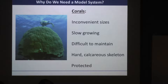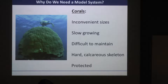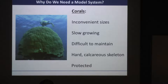Corals are incredibly slow growing — some species grow slower than a centimeter a year. Growing them up from an individual polyp to a colonial size could take a hundred years. Nobody's got that kind of time.